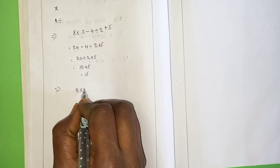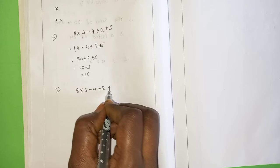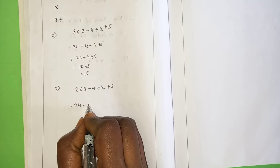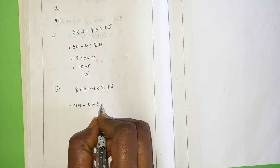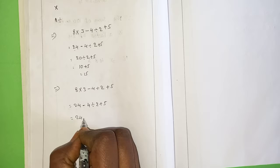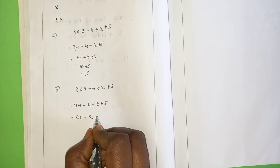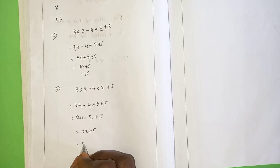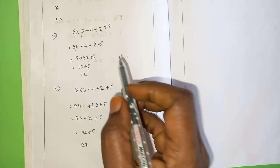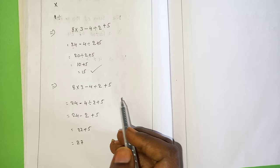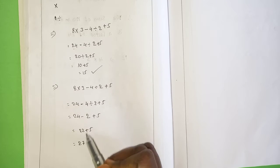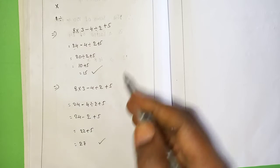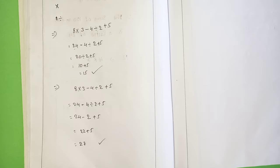Now the same problem done a second way: 18 × 2 ÷ 3 minus 4 divided by 2 plus 5. 8 threes are 24, minus 4 divided by 2, plus 5. 24 minus 2 is 22, plus 5 is 27. So when doing left to right I got one answer, and when I did 4 divided by 2 first then subtraction I got another answer. Which is the correct process?